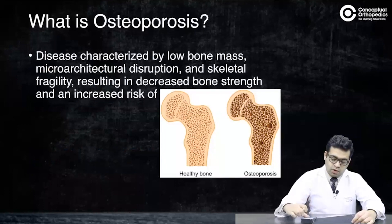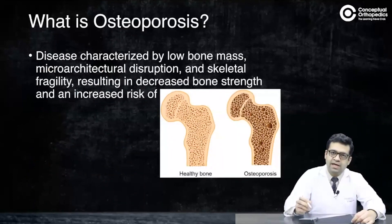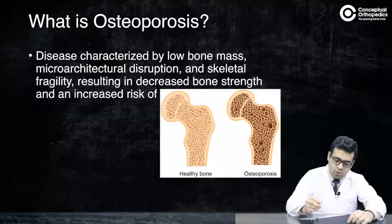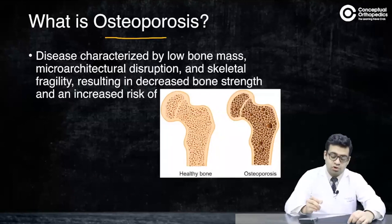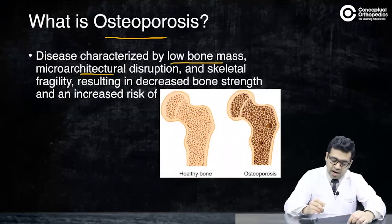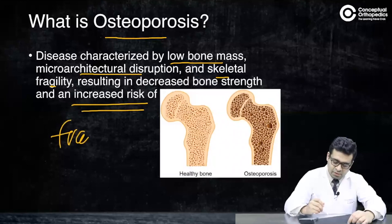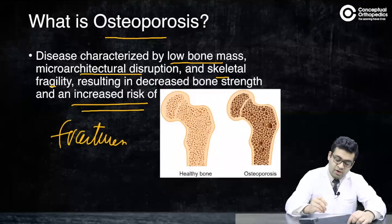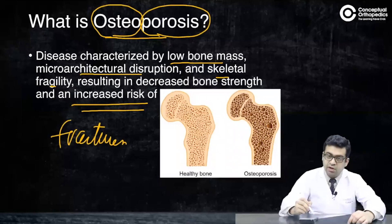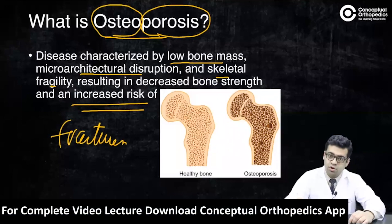Before we move on to BMD or the DEXA scan, let me tell you what osteoporosis is. Most of us know it is a disease characterized by low bone mass, micro-architectural disruption, and skeletal fragility, resulting in increased risk of fractures. The word osteoporosis comes from 'osteo' meaning bone and 'porosis' meaning having pores. If you do a cross-section of an osteoporotic bone, this is how it will look — as if it has multiple pores inside it.